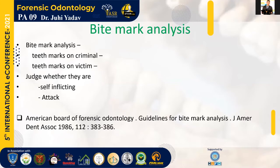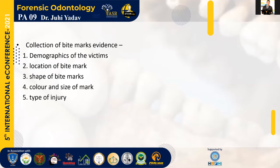We have to go for bite mark analysis — examining teeth marks on criminals and on victims, because they provide suitable knowledge about how this crime has taken place. We have to judge whether these bite marks are self-inflicted or the result of an attack or a crime. We also need to collect bite mark evidence from the victim, taking a demographic of the victim including age, sex, religion, and race, as that gives us certain important evidence. The location of bite marks is also important — in cases of sexual assault, bite marks appear at certain locations, allowing us to judge the motive of the crime.